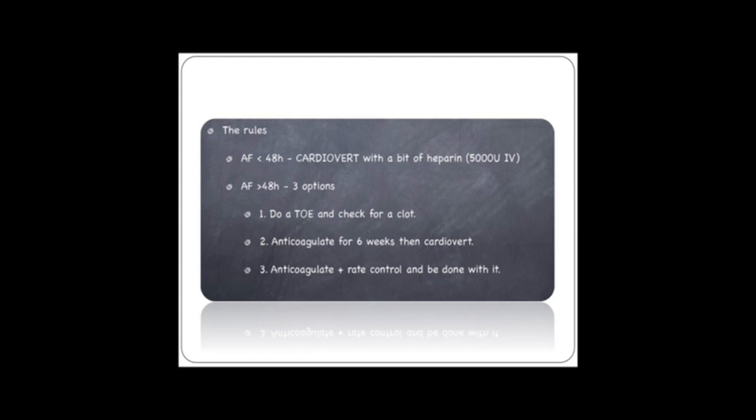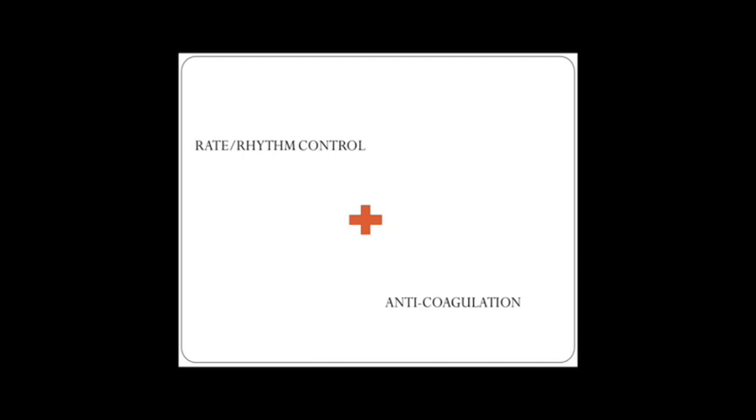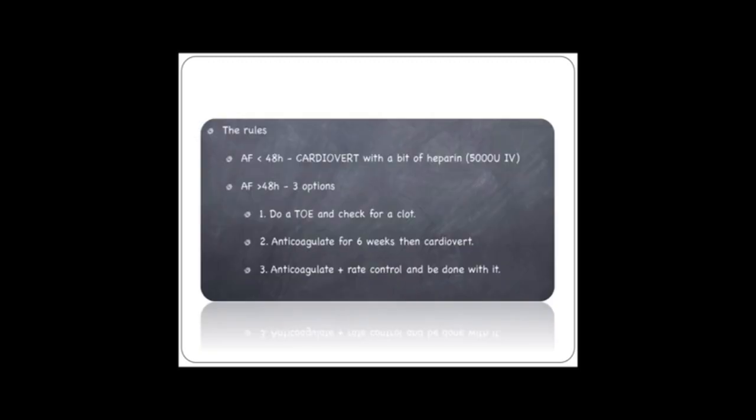I've gone through that quite quickly, I know, but this stuff's more important. Concepts of rate control, rhythm control, and anticoagulation. That's trans-esophageal echo. If you actually want to look to see if there's a clot in the left atrium, and it usually forms in the left atrial appendage, you can do a trans-esophageal echo.